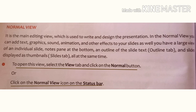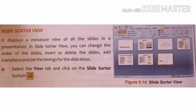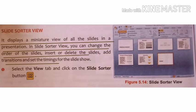To open Normal view, select the View tab and click on the Normal button. Otherwise, click on the Normal view icon on the status bar. You can use the view buttons on the status bar to select Normal view.